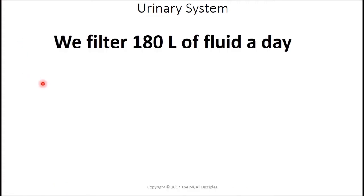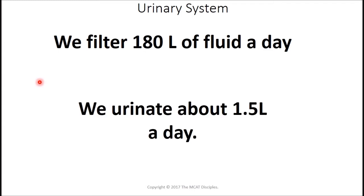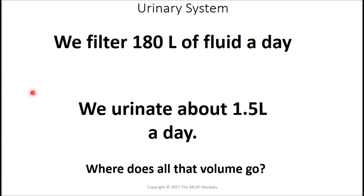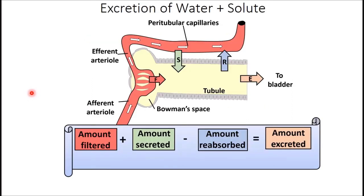We filter about 180 liters of fluid per day — that's a lot. However, we only urinate about 1.5 liters, so where does all that volume go? If we only filtered, we'd have to urinate 180 liters a day. The answer is reabsorption and secretion. There are three major processes at the renal system: filtration, secretion, and reabsorption. You can count excretion as a fourth, but that happens passively.